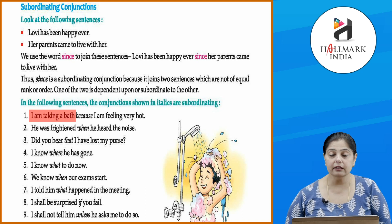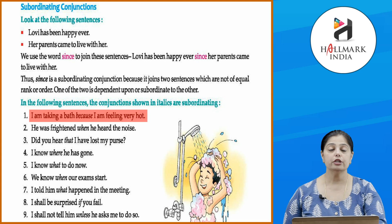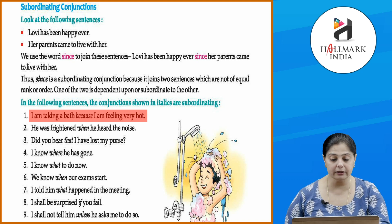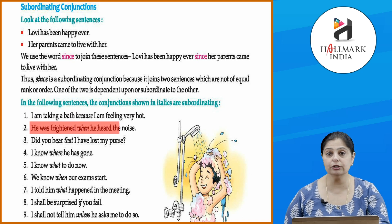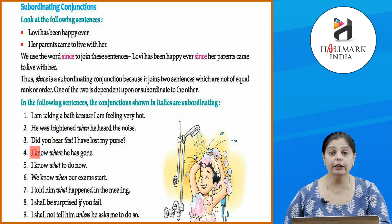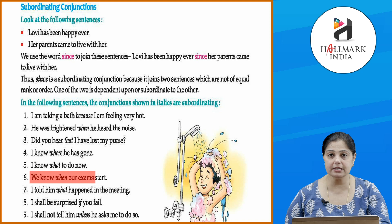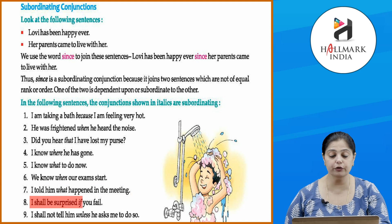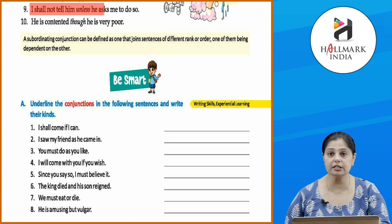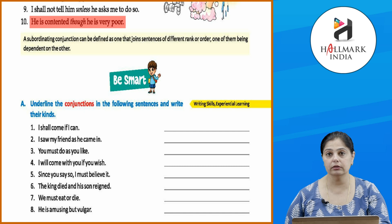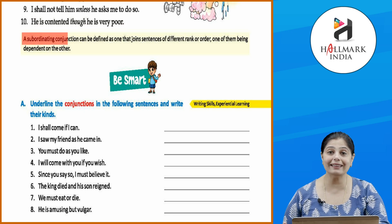Examples of subordinating conjunctions in sentences: 'I am taking a bath because I am feeling very hot.' 'He was frightened when he heard the noise.' 'I know where he has gone.' 'I know what to do.' 'I told him what happened in the meeting.' 'I shall be surprised if you fail.' 'I shall not tell him unless he asked me to do so.' 'He is contented though he is poor.'